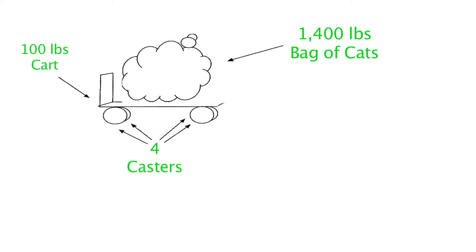If the cart weighs 100 pounds, we'll add the weight of the cats for a total of 1,500 pounds. Now we'll subtract one from the total number of casters we intend to use. This is to build a safety margin into the weight capacity of the cart.